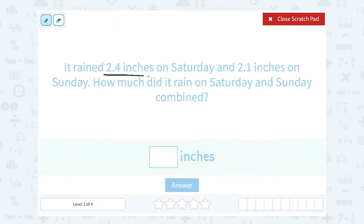Well if we have 2.4 inches on Saturday and 2.1 inches on Sunday, we would need to add those numbers together to figure out the total amount of rain for both days combined. Combined is the hint that we're going to add those numbers. So we're going to say 2.4 plus 2.1.